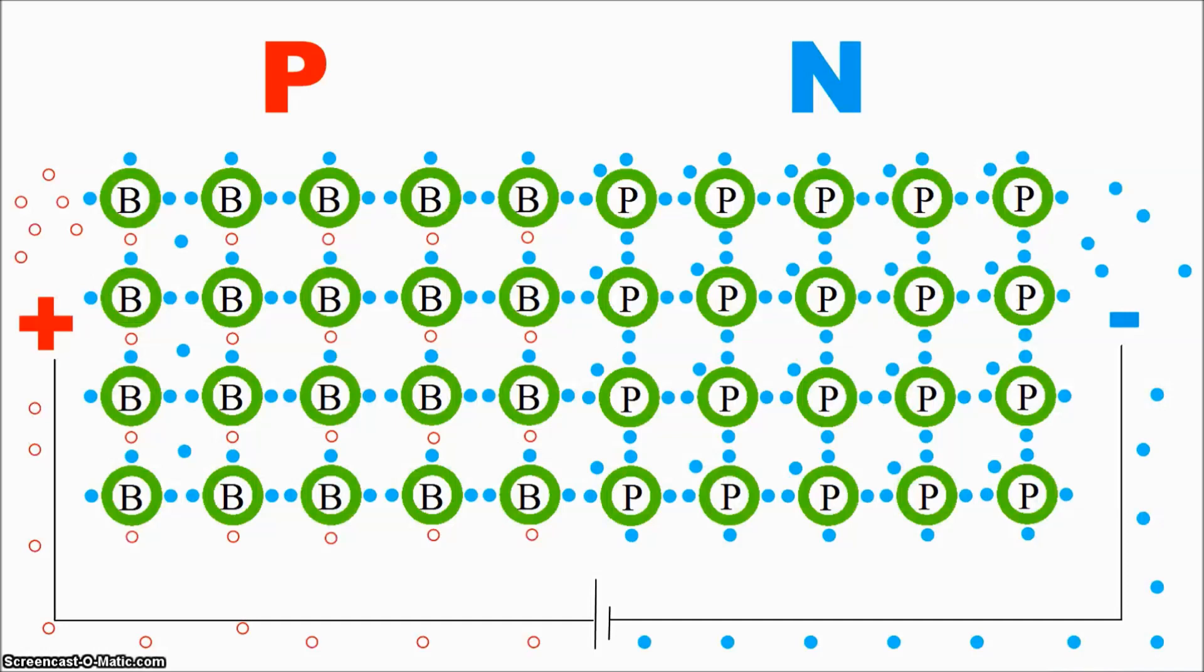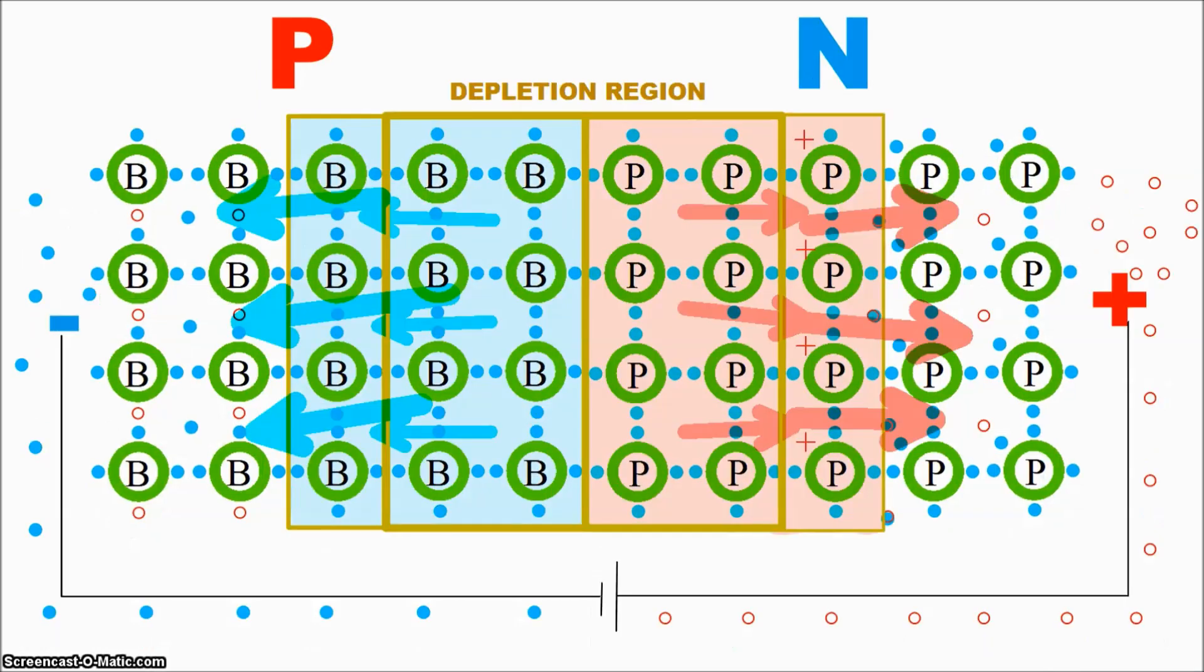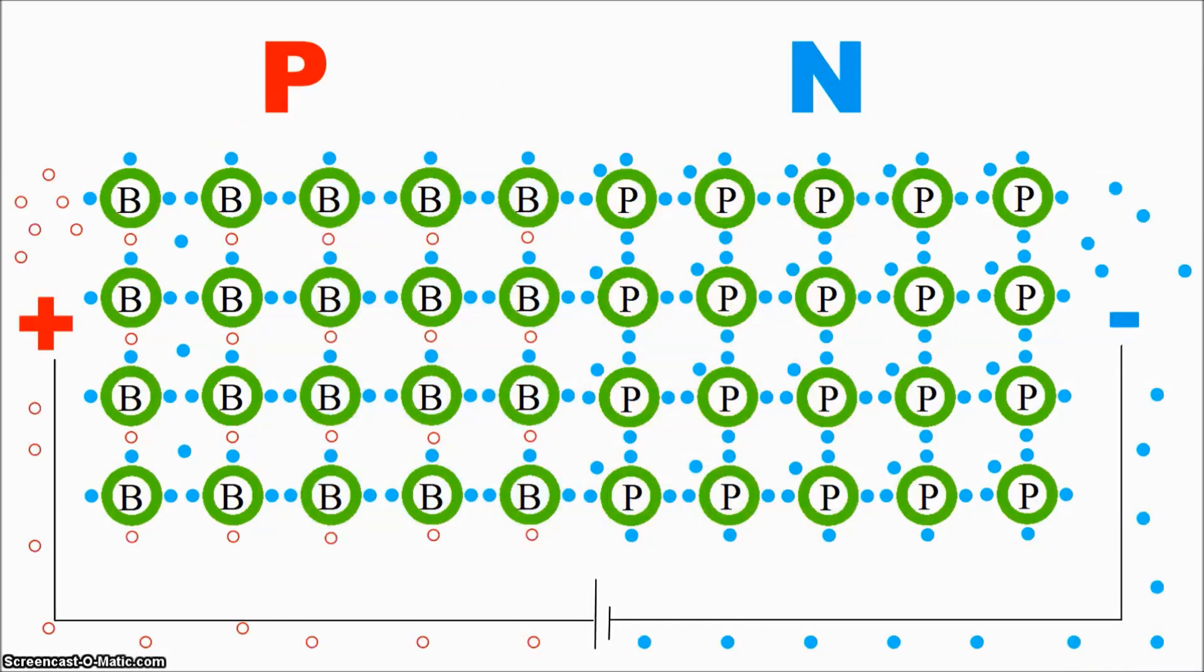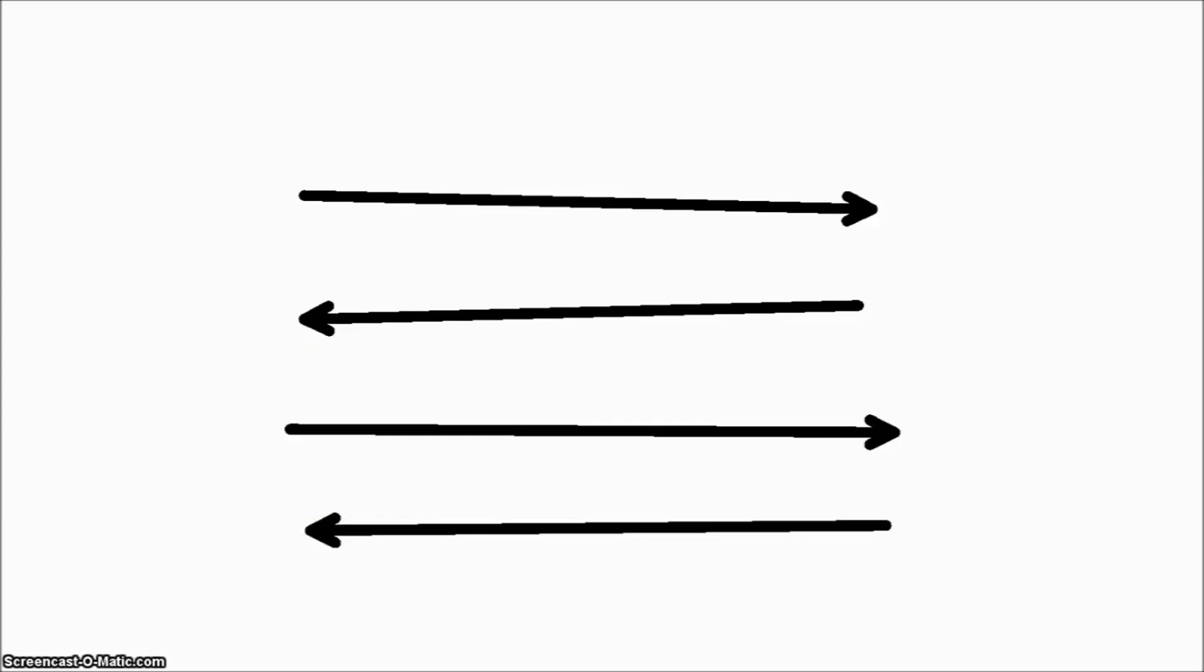So we see that in a p-n junction, electric current flows in one direction but doesn't flow in the other. The p-n junction creates a diode, a device which only allows the current to flow in one direction. These are very useful in turning alternating current that goes back and forth into direct current that only goes in one direction and powers all of our electronics.